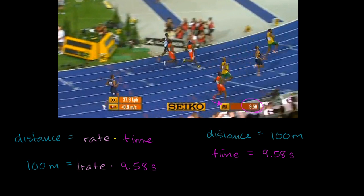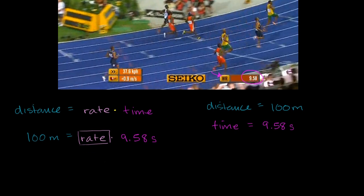We care about solving for rate. So how can we do that? If you look at the right-hand side of the equation, I have 9.58 seconds times rate. If I were able to divide this right-hand side by 9.58 seconds, I'll just have rate on the right-hand side. But I can't just divide one side of an equation by a number. When we started off, this is equal to this up here. If I divide the right side by 9.58, in order for the equality to still be true, I need to divide the left side by the same thing — I have to divide both sides in order for the equality to still hold.